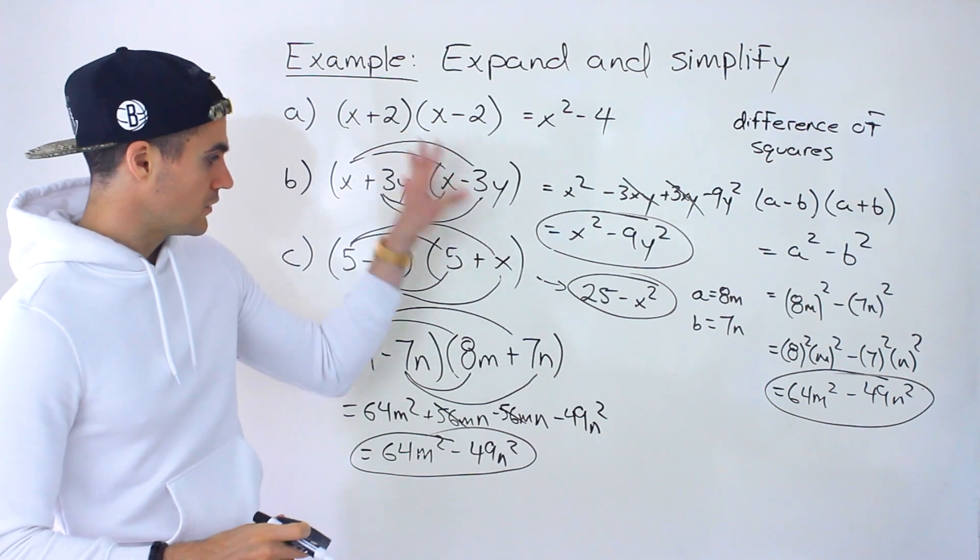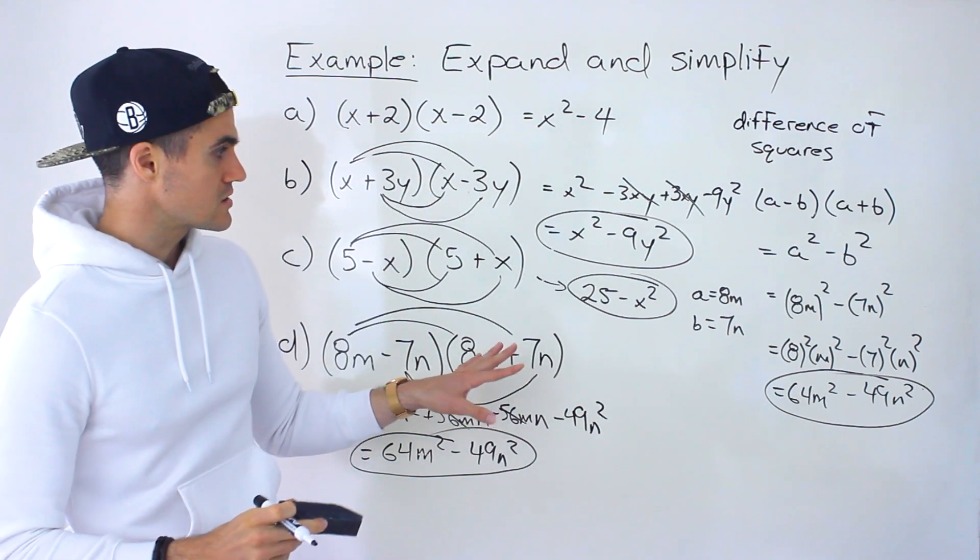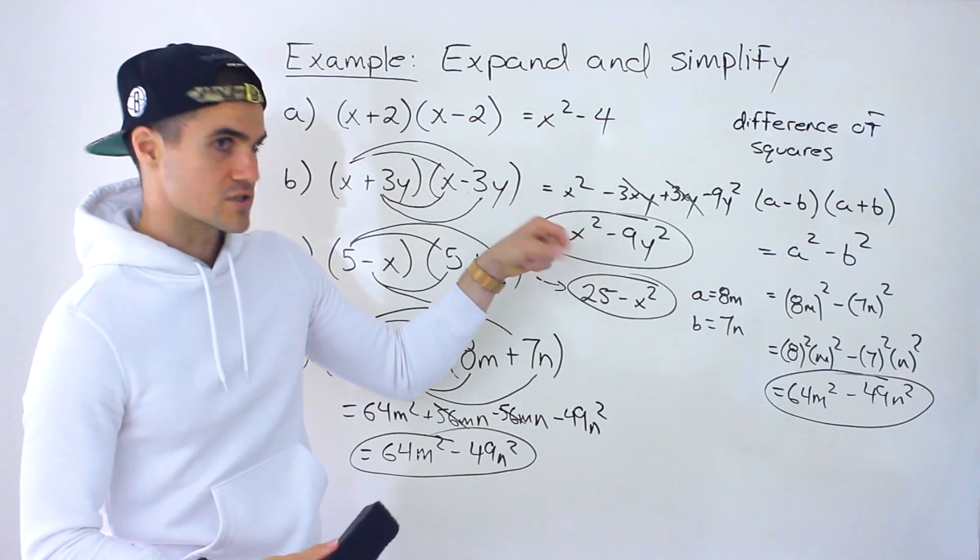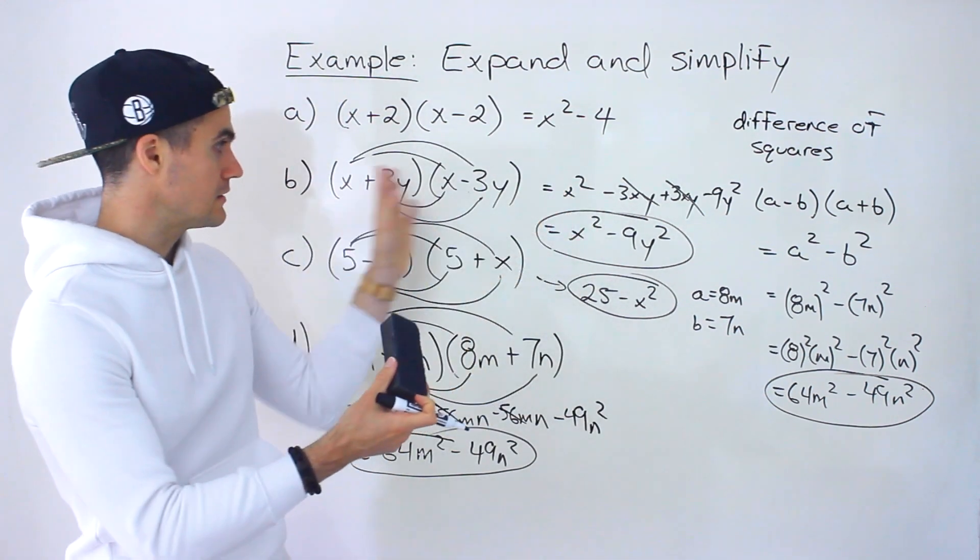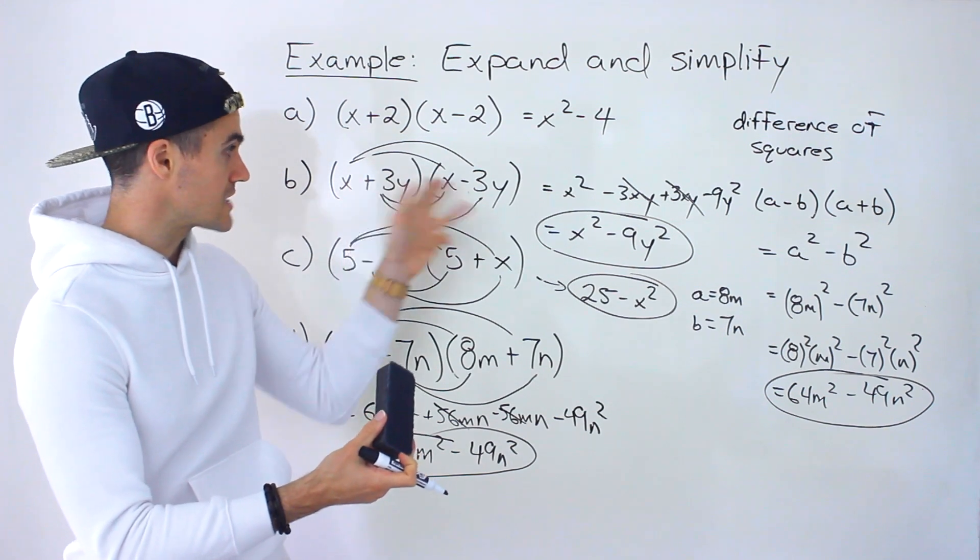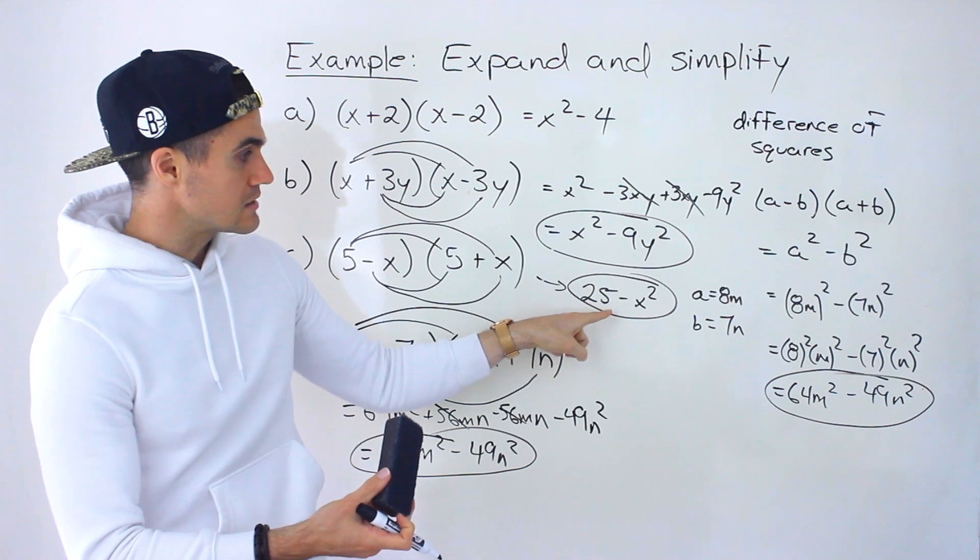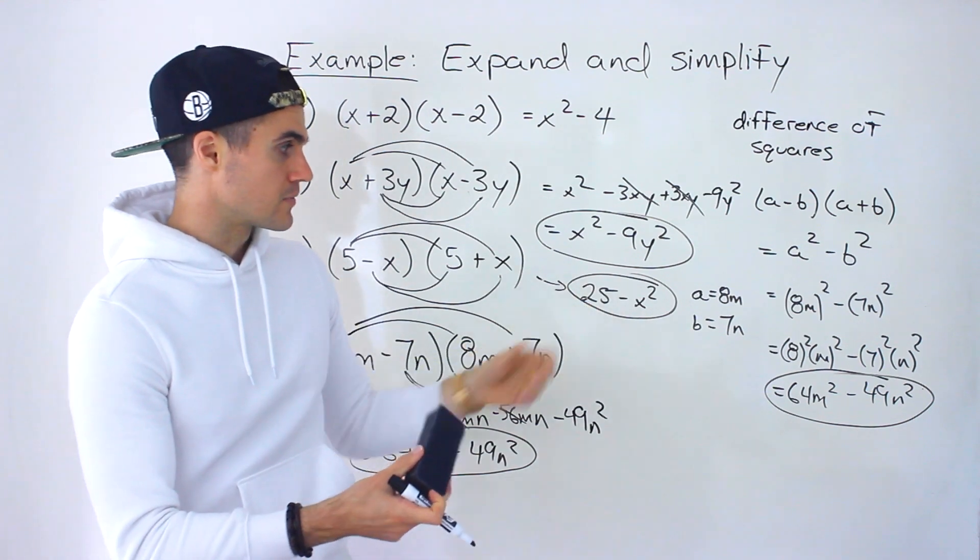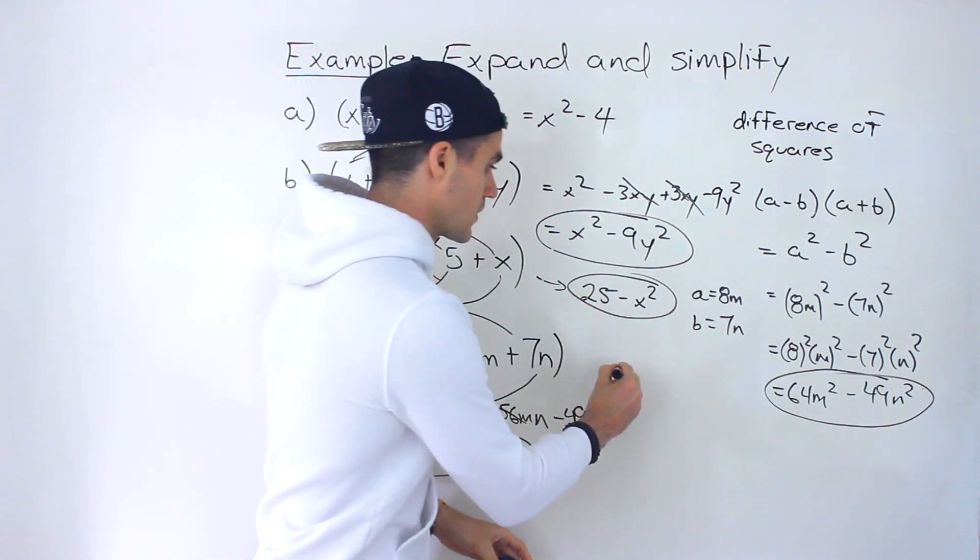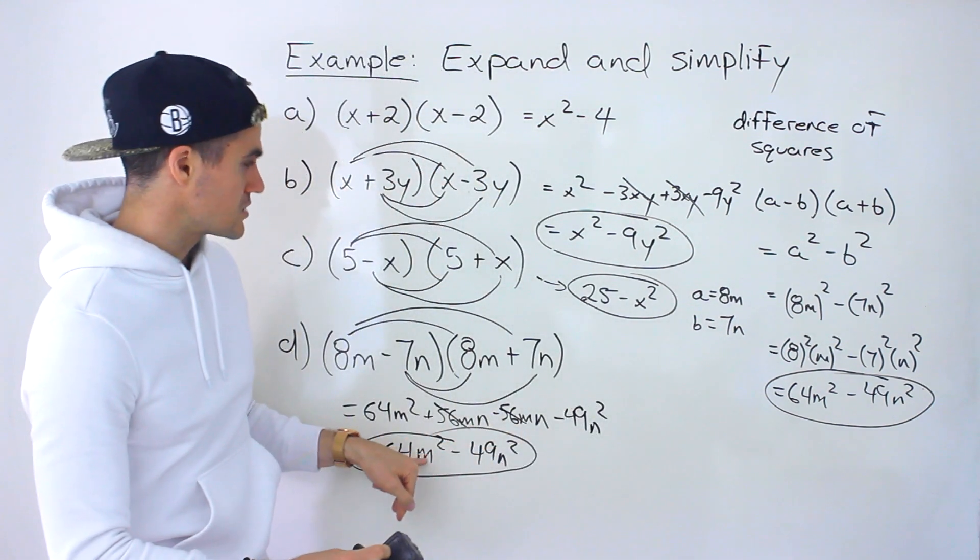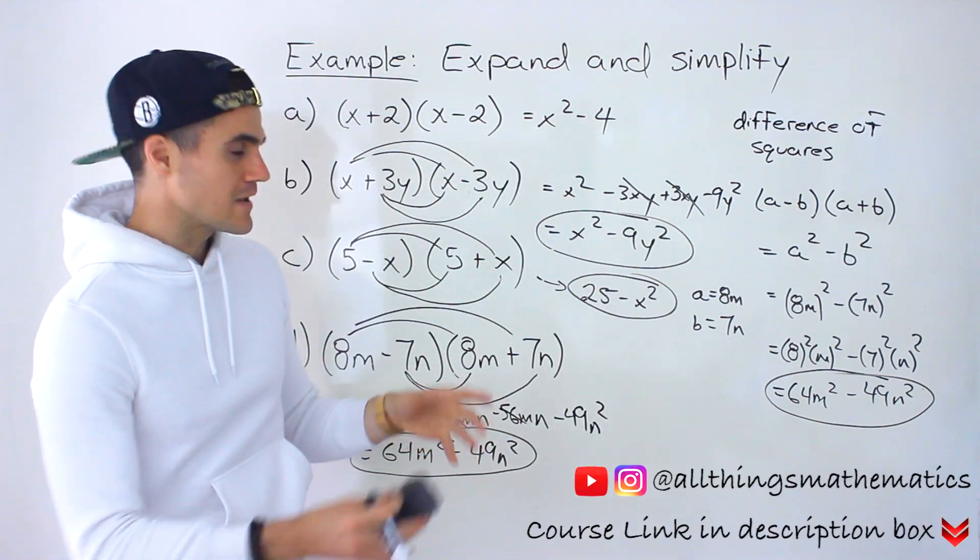Right? So be on the lookout for these kinds of expressions, their difference of squares, and your final results for multiplying these kinds of binomials by each other, where they're the same but the sign is different in between them, should be these kinds of quadratics that are just ax squared.